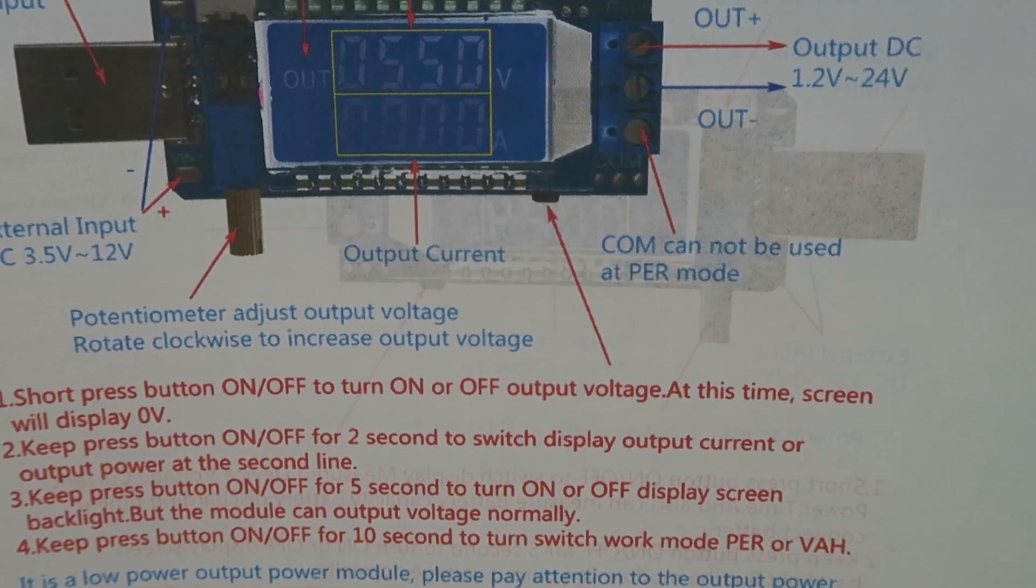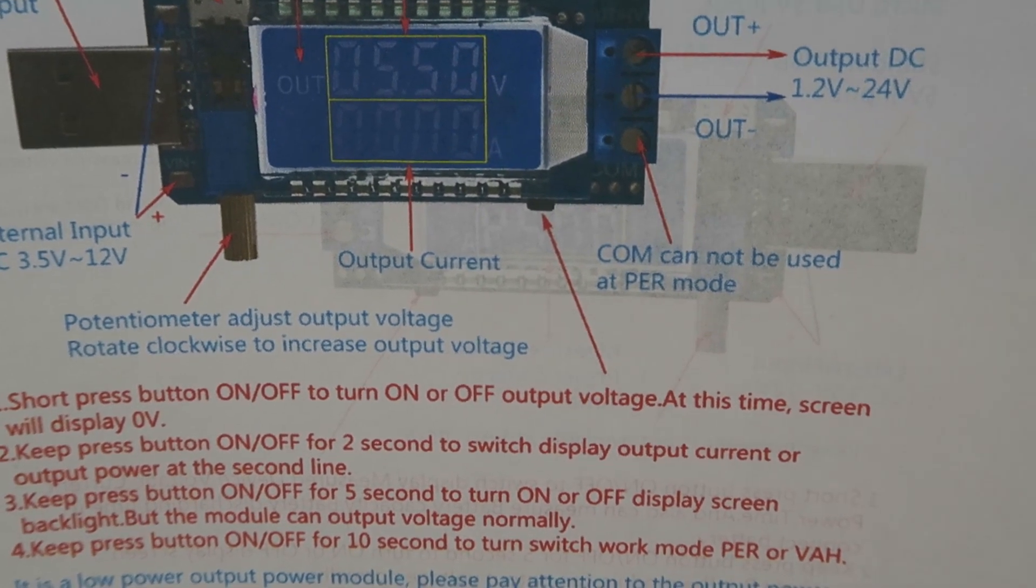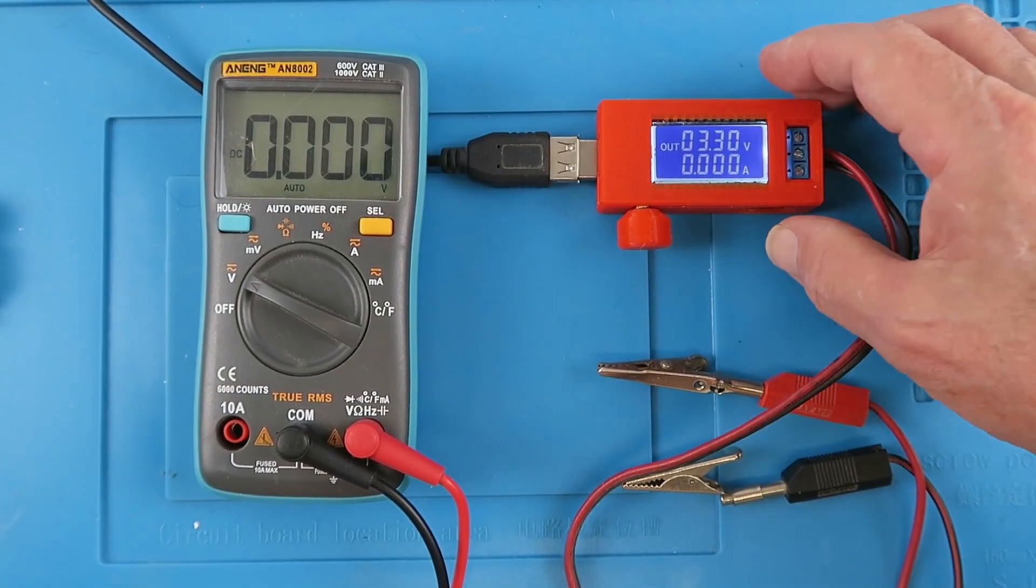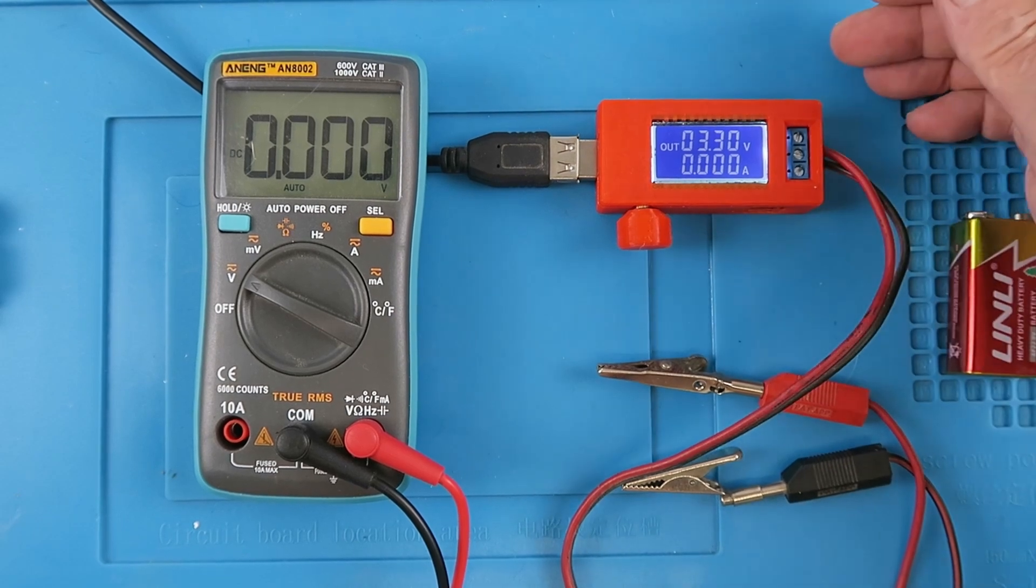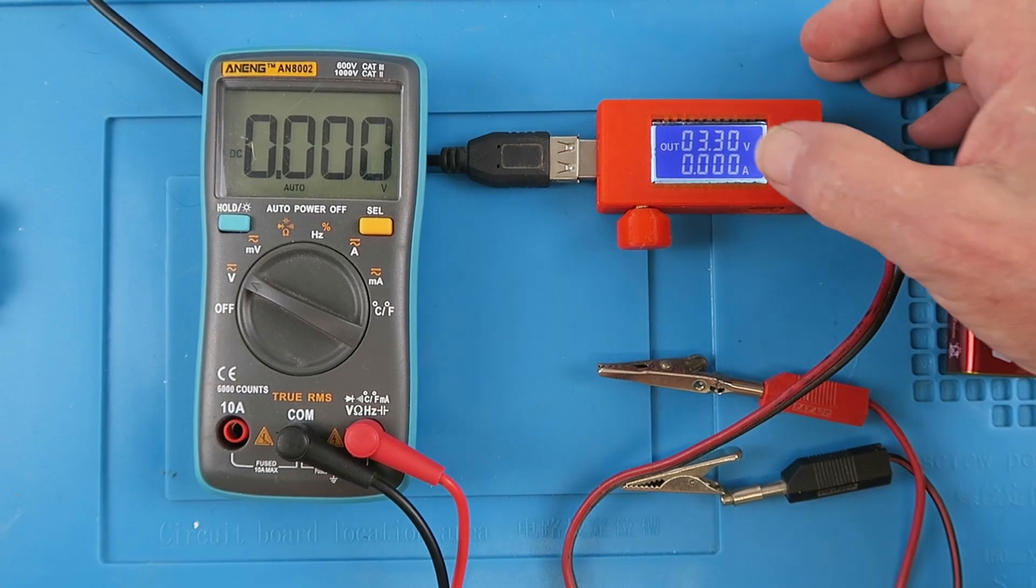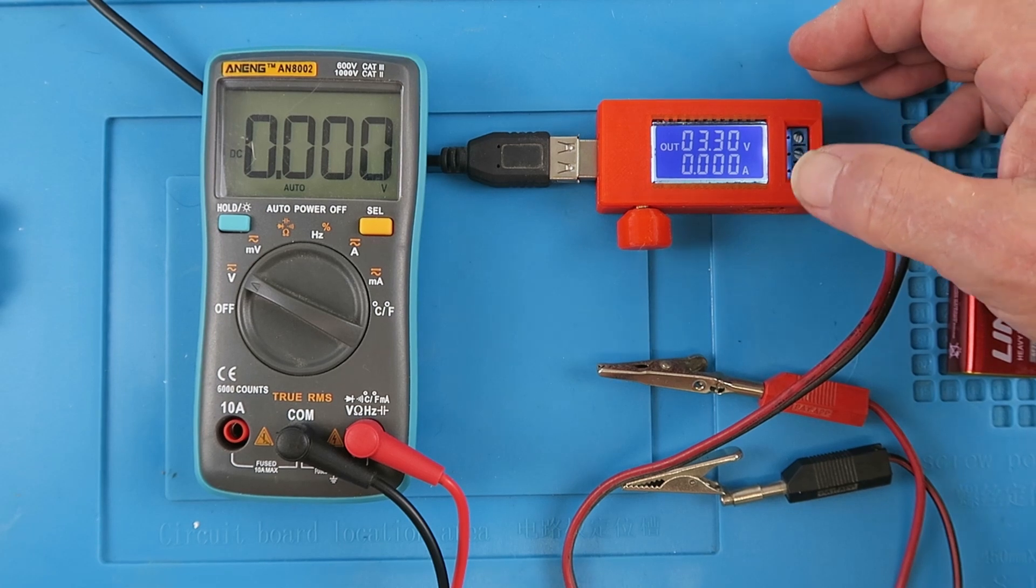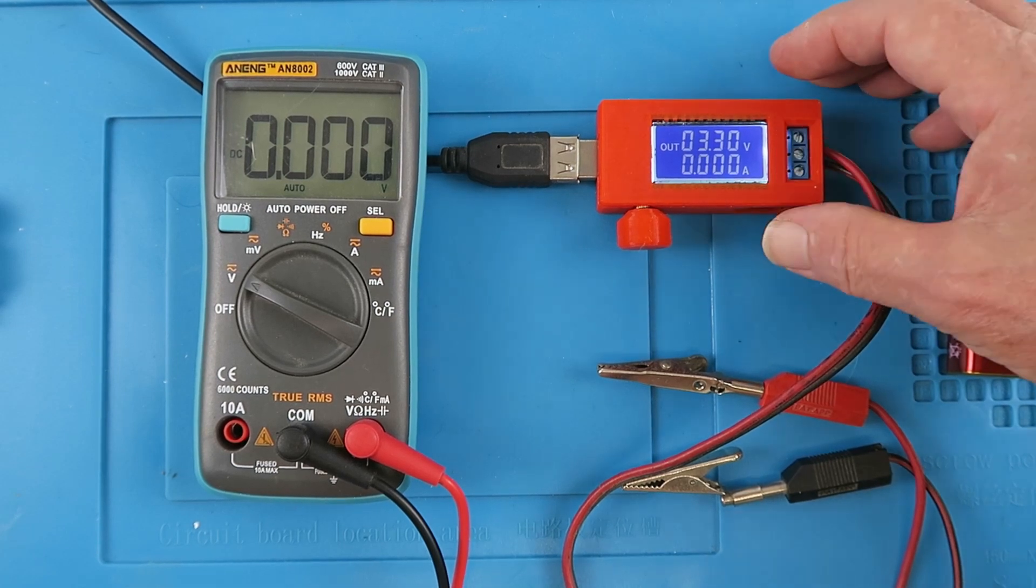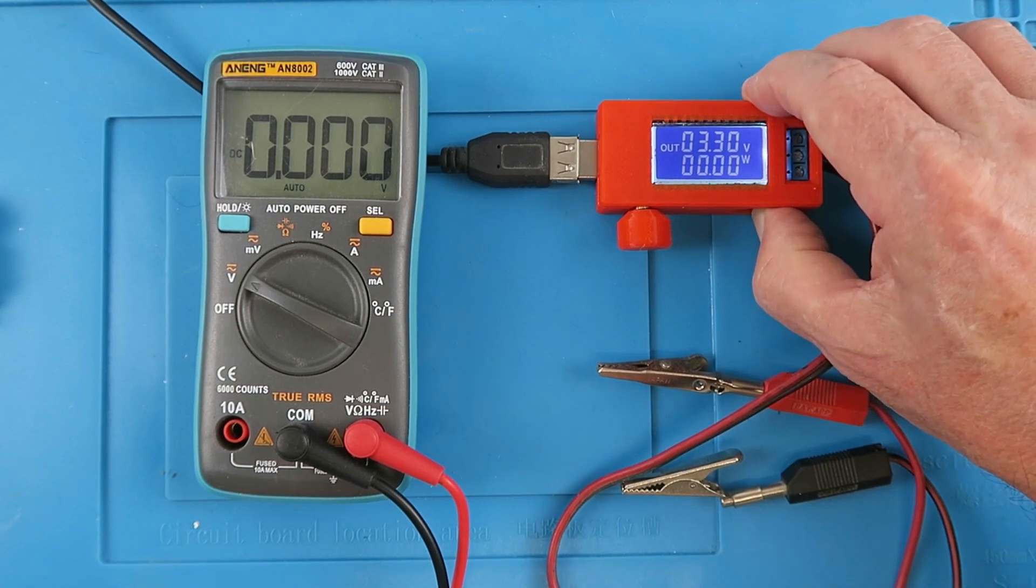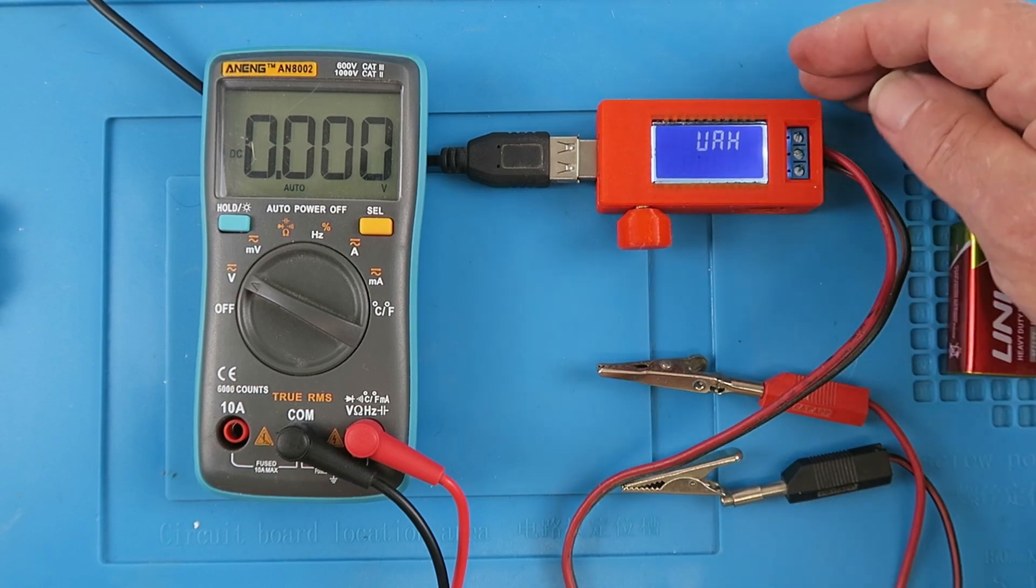What we're going to do next is to switch it into its volt amp and power meter mode and see how that works. To switch the device into its power meter mode, we need to press and hold the on-off button for 10 seconds. You will see also another feature after 5 seconds, the actual backlight goes out, so you can choose to switch that off should you desire. Let's hold it for 10 seconds and get it into power meter mode. There we are.